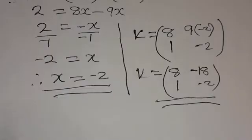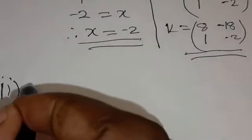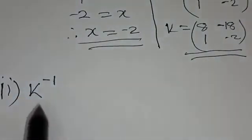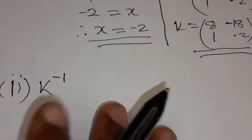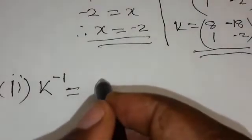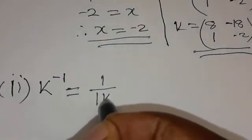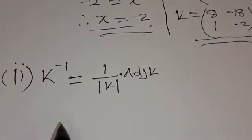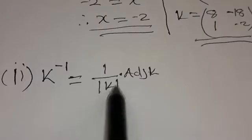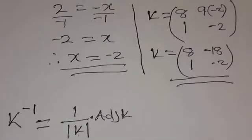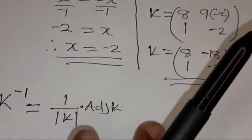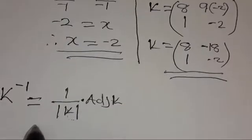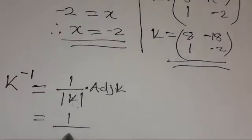The second part of A says: find the inverse of K. The inverse is denoted by K to the power of negative 1. K inverse is given by 1 over the determinant of K times the adjoint of the matrix K. We have been given that the determinant is 2, so now our job is just to find the adjoint.